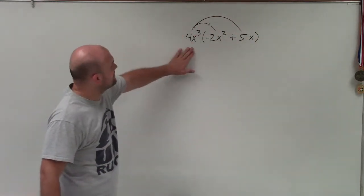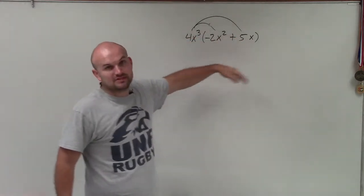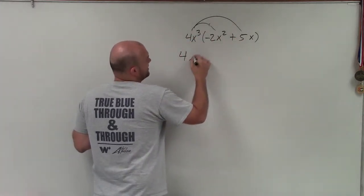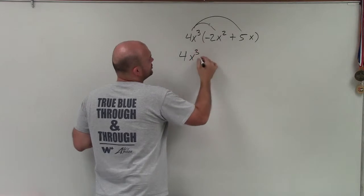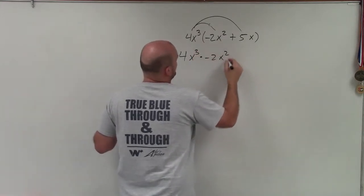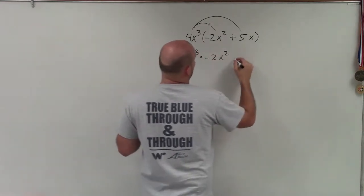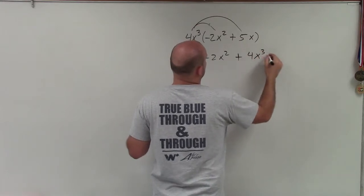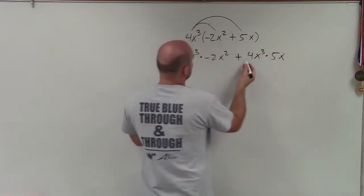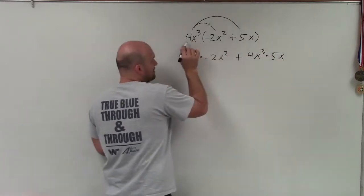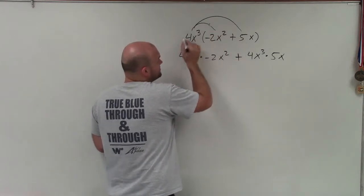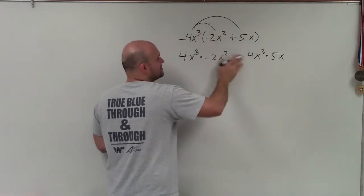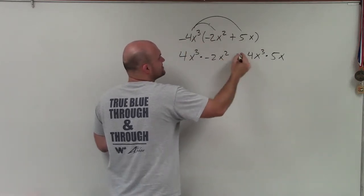I take my term on the outside and I'm going to multiply it to both my terms on the inside. So basically, what I'm doing is writing 4x cubed times negative 2x squared, plus 4x cubed times 5x. The reason why I wrote plus is because that's a positive — if it was a negative, I'd write minus. But it's positive, so it's plus.